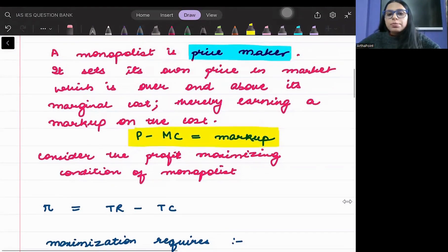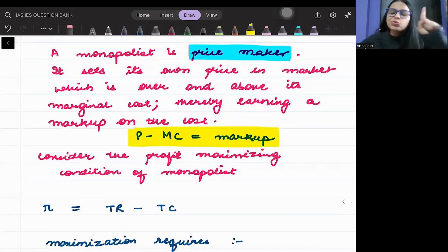This is the markup earned by the monopolist. So monopolist is one, he is a price maker. The monopolist will charge a price over and above marginal cost. The difference between how much he is able to charge above marginal cost, that is called the markup.